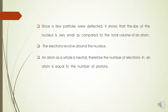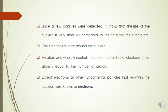The atom as a whole is neutral, which means that electron and proton numbers are equal. If the atom does not balance its electron and proton charges, alpha particles would be disturbed. The last point is except electrons, all other fundamental particles that lie within the nucleus are known as nucleons.